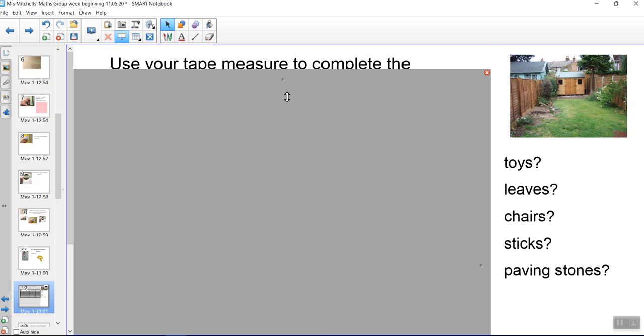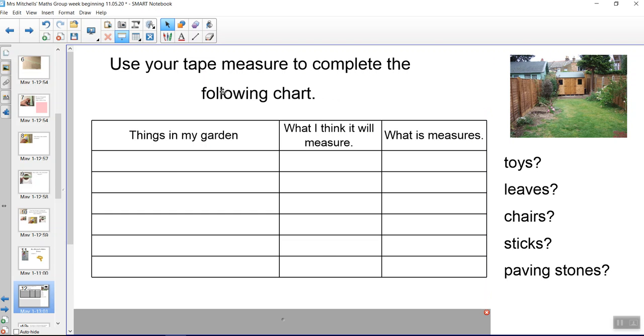Things in your garden and what you're going to do for me is you're going to make a chart like this and then you're going to record the measurements. So the first thing in your chart is things in my garden. Write down the things in your garden. I've got one, two, three, four, six spaces so you need to find six things.